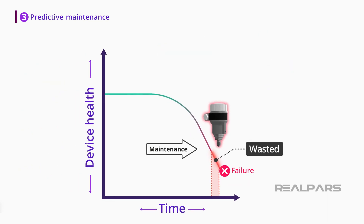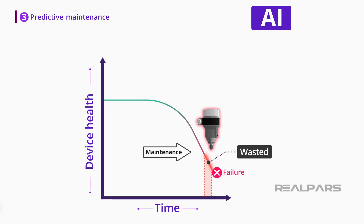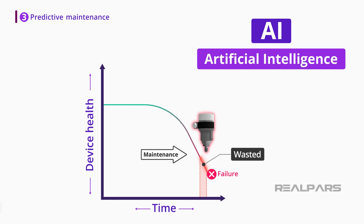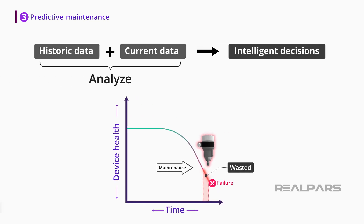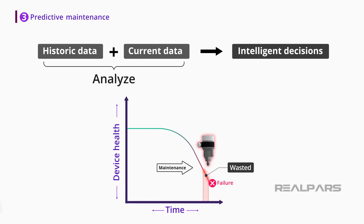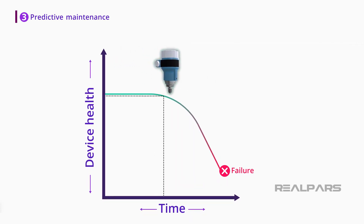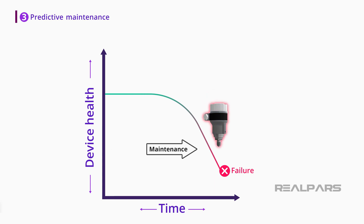The fancy term we currently use — or maybe overuse — for utilizing this data is AI, or Artificial Intelligence. But the basic principle comes down to analyzing historic and current data and making intelligent decisions for the future. One of these smart decisions is to predict when a similar new device will fail and perform maintenance right before that, hence predictive maintenance.